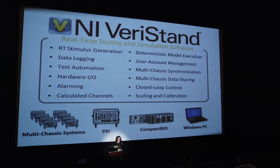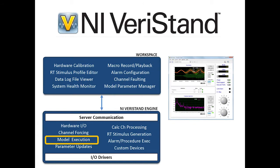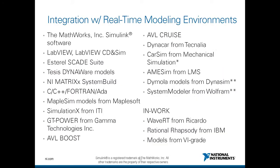NI VeriStand is another software tool we make — it's written in LabVIEW, it's configuration-based, and it's meant for real-time testing, including the capability of bringing in multiple models. John Wilson is here from NI, focused on hardware-in-the-loop and real-time tests — you can talk to him during a break. A key part of NI VeriStand is model execution within the VeriStand engine, where we have a long list of modeling environments that have been tested through C-code generation, and we have many customers using this technology.